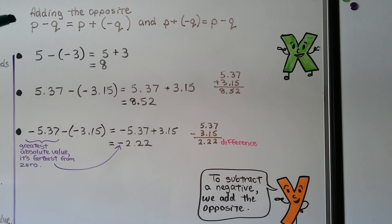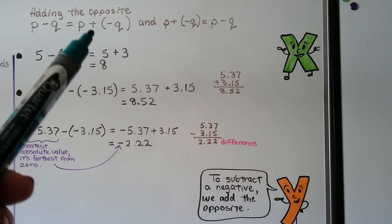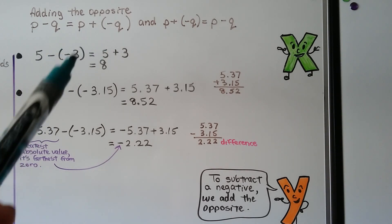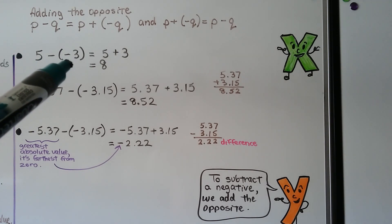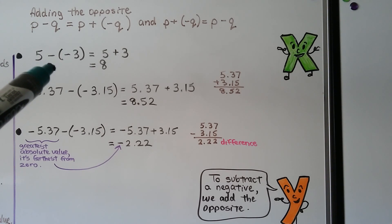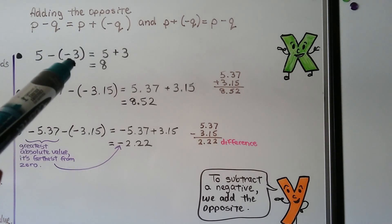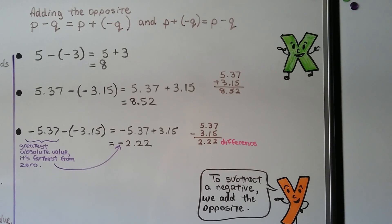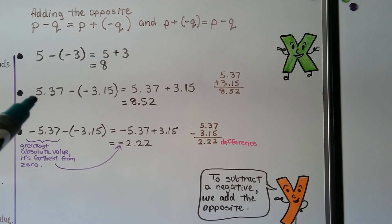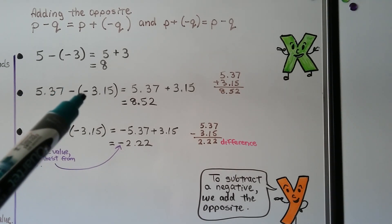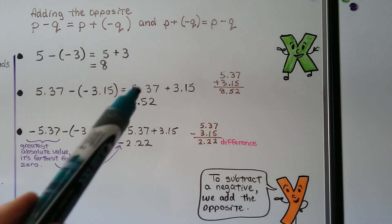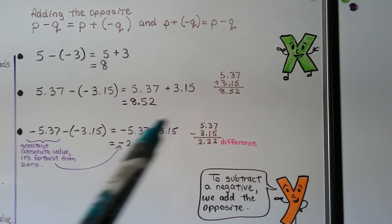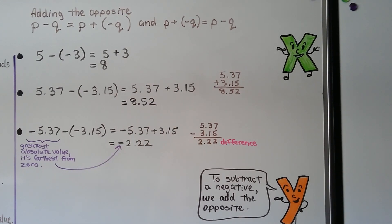For adding the opposite, we can say p minus q is equal to p plus a negative q. If we have 5 minus a negative 3, we add the opposite: that becomes a plus and that becomes a positive 3. So 5 plus 3 is 8. If we have 5.37 minus negative 3.15, that becomes a plus and that becomes a positive. We add the two numbers together and we get 8.52, and it's positive.